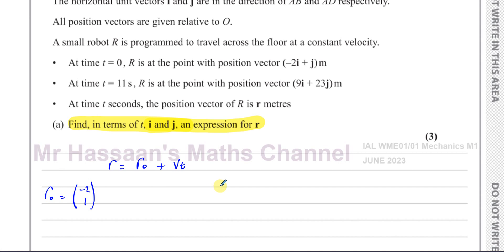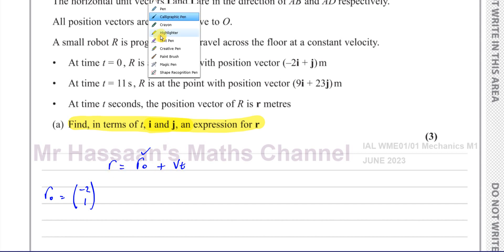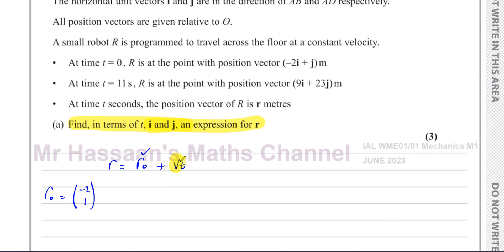We know that the position vector when time is 0 is r₀, which is minus 2i plus j. It's going to be in terms of t, so for us to find r we need to find what the velocity is — we need to find the velocity that it's traveling at.